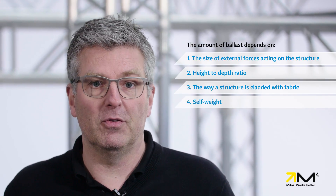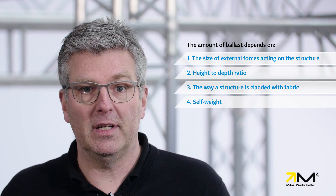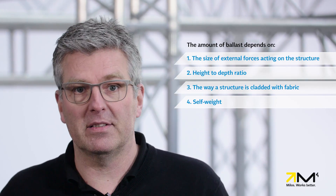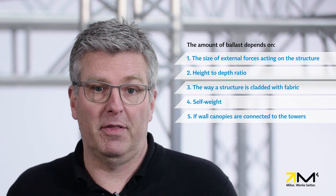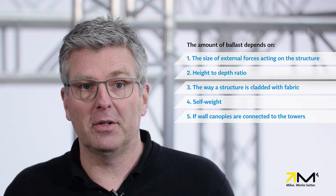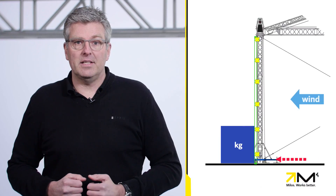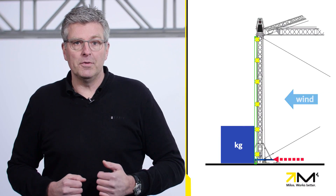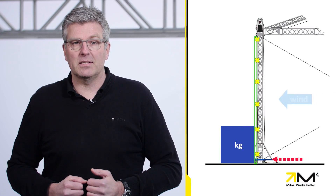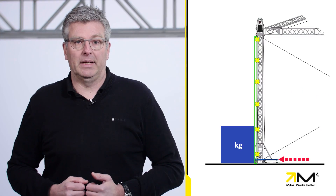Fourth, the self weight. The higher the self weight, the less ballast is required. Fifth, if a wall canopy is connected to towers. In this case, the wind moves the tower base. Ballast keeps this from occurring.